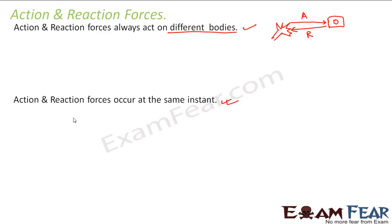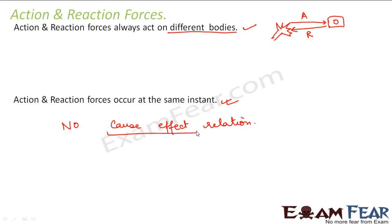Many people think that the relationship between action and reaction is the same as a cause-effect relation — that first action occurs and only after that reaction occurs. But it is not like that. Action and reaction occur at the same instant. There is no cause-effect relation between action and reaction. Many people have this misunderstanding that action is the cause which gives rise to reaction, and reaction is the effect. But as soon as there is an action there is a reaction at the same instant. Also, as mentioned, they act on different bodies. For example, if action is the force exerted by A on B, then reaction would be the force exerted on A by B, and they are in opposite directions.